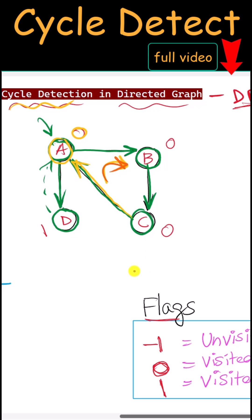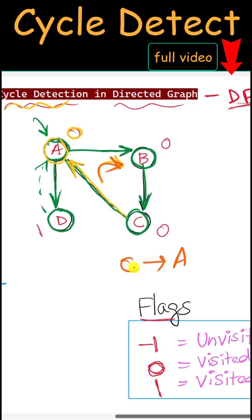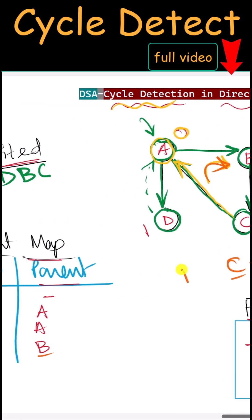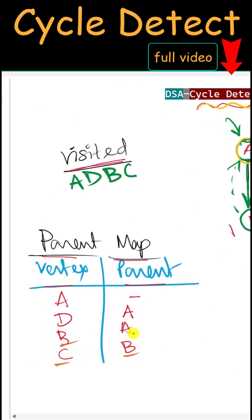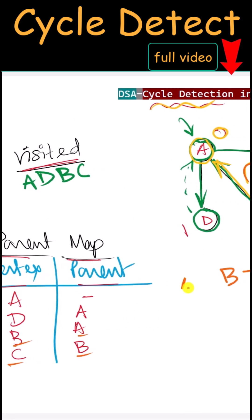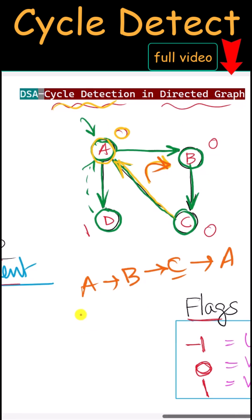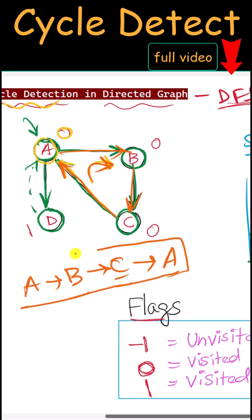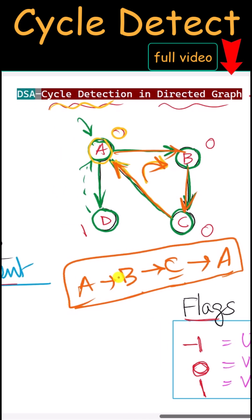We found the cycle while visiting from C to A. C has parent B, and B has parent A. So if we start from A to B, then visit B to C, from C we can reach back to node A — and there is our cycle in the graph.